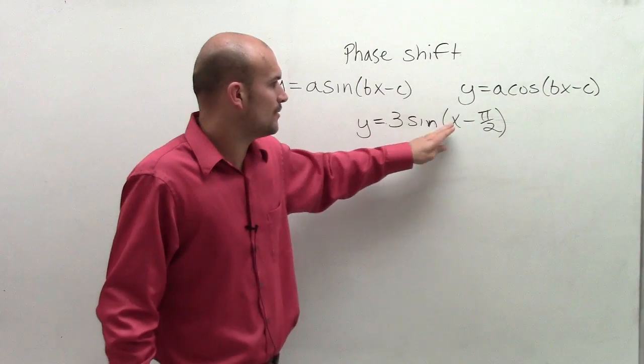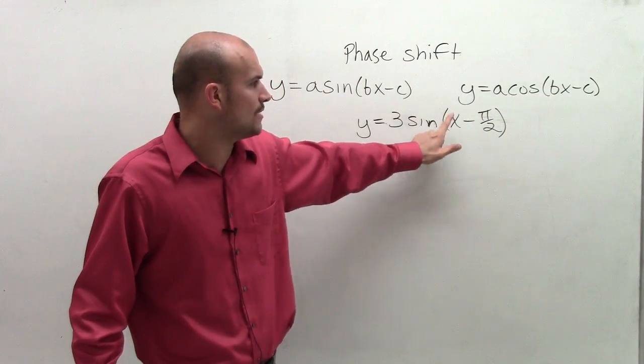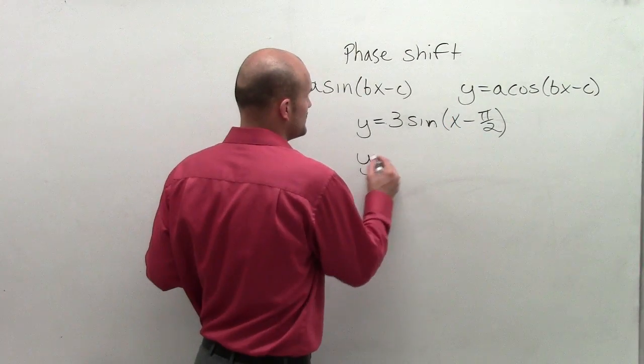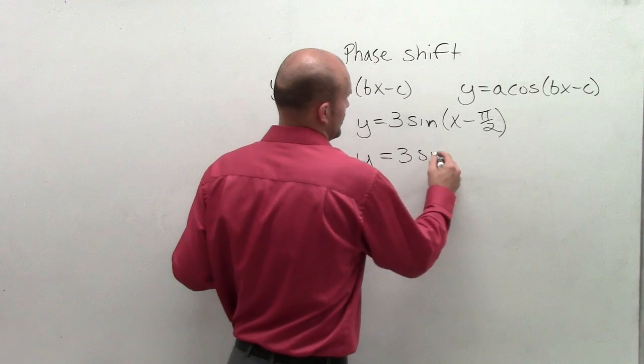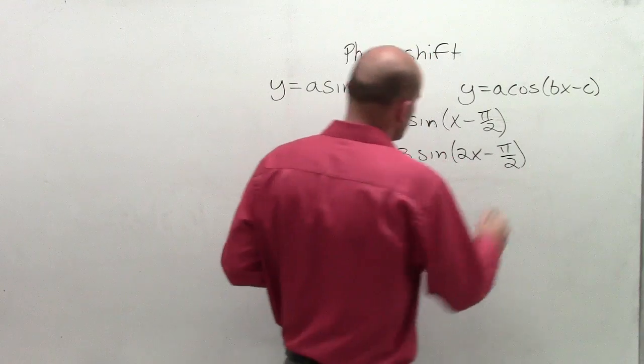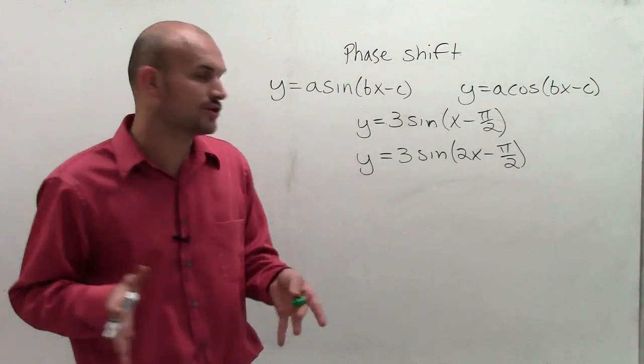Now, what I want to do is I want to look at that. We know we can always do that when our coefficient of x is 1. So what happens when we don't have a coefficient of 1?